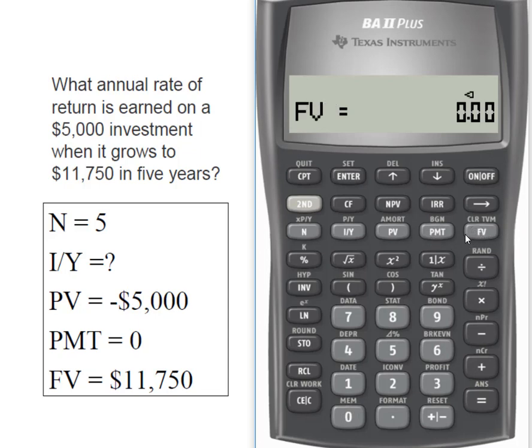But what we know is in the future, that future value is going to be $11,750. That's my future value. And now what we want to compute is our interest rate. So the interest rate that would be required in order to grow $5,000 into $11,750 in five years is roughly 18.64%.